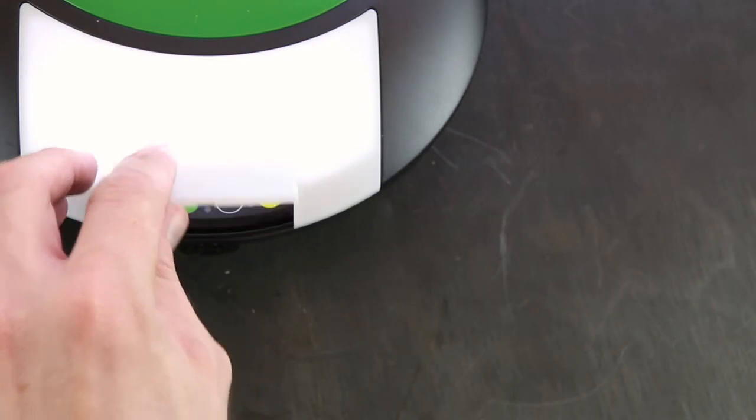The first step to code your remote is to locate the learn button. In this instance it's a little yellow button under this lid.